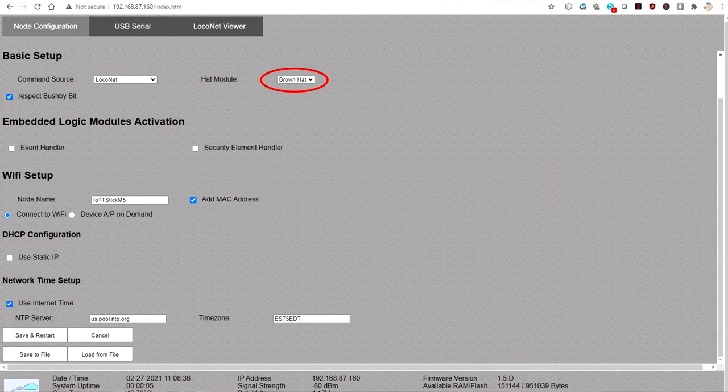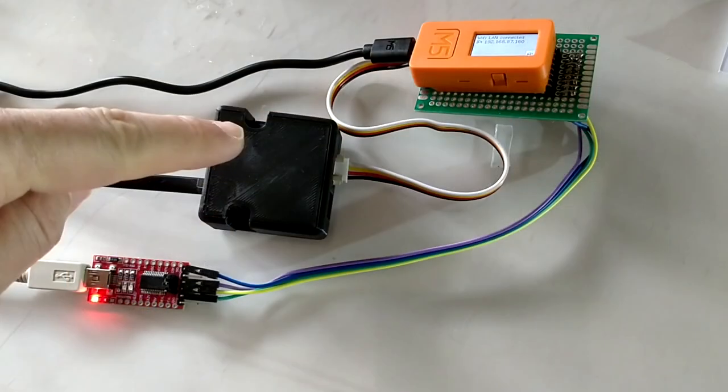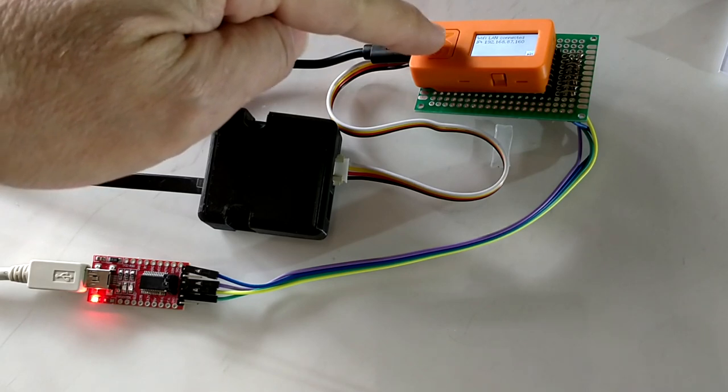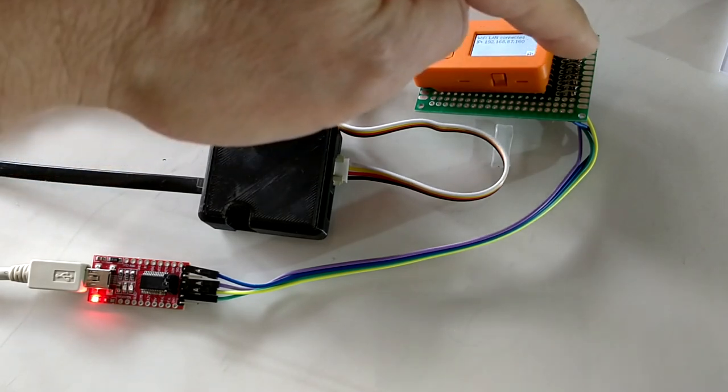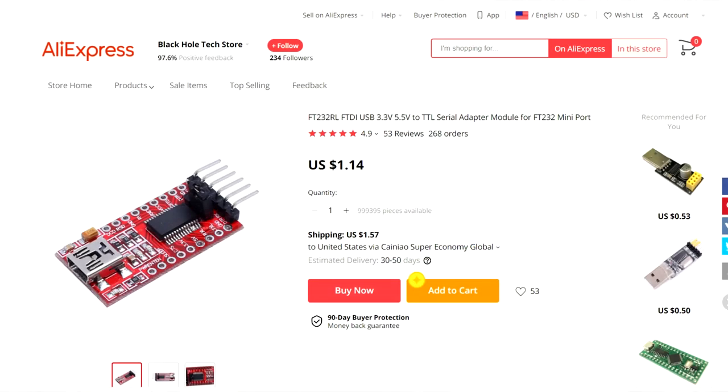So, I added the brown hat option to the hat list and here is an example that shows how it works. I connect a LocoNet interface to the growth port side of the stick. On the hat side, I connect a USB to serial converter, for example the popular FTDI programmer that is available for less than $2 on AliExpress.